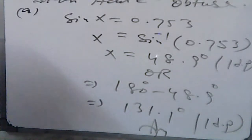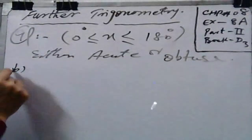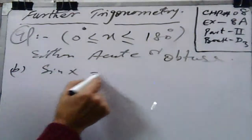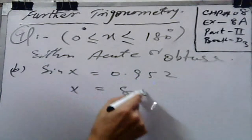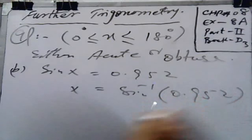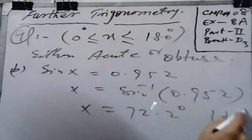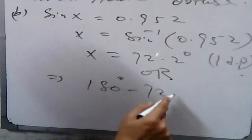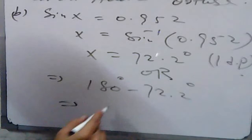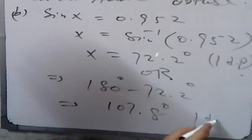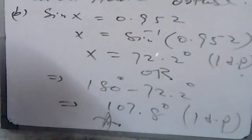For part b, sin x is equal to 0.952. The value of x is sin inverse 0.952, giving 72.2 degrees, up to 1 decimal place. Once again it is an acute angle. For the obtuse angle, subtract from 180. Both the acute and obtuse angles have been calculated.